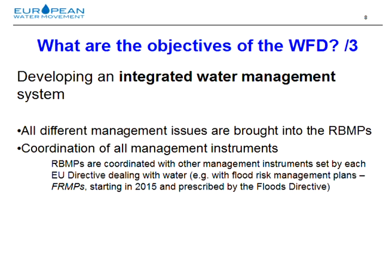The third objective of the Water Framework Directive is to create an integrated water management system, which brings together all different aspects related to water in only one document — the river basin management plan — which is then supposed to be coordinated with all the other management plans covering all different aspects of water.